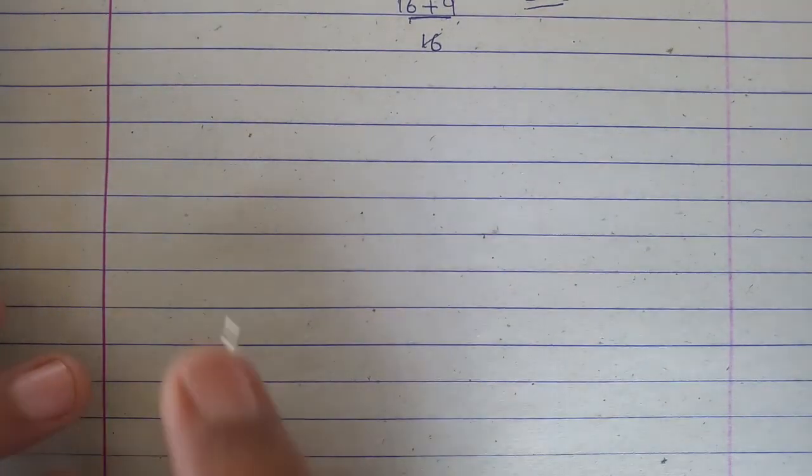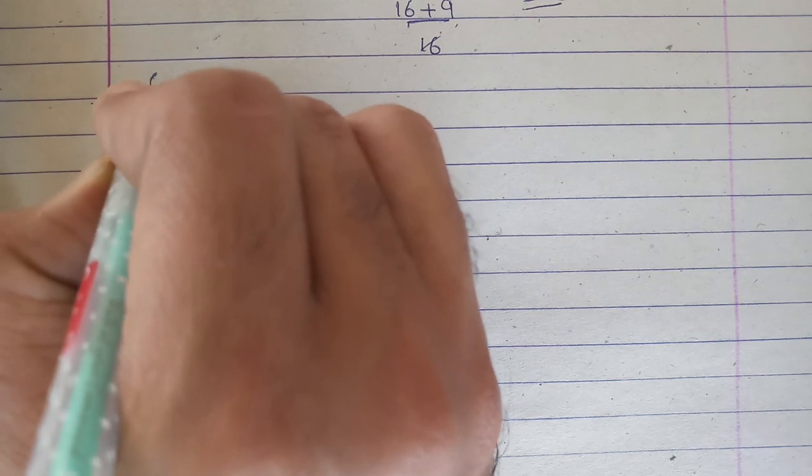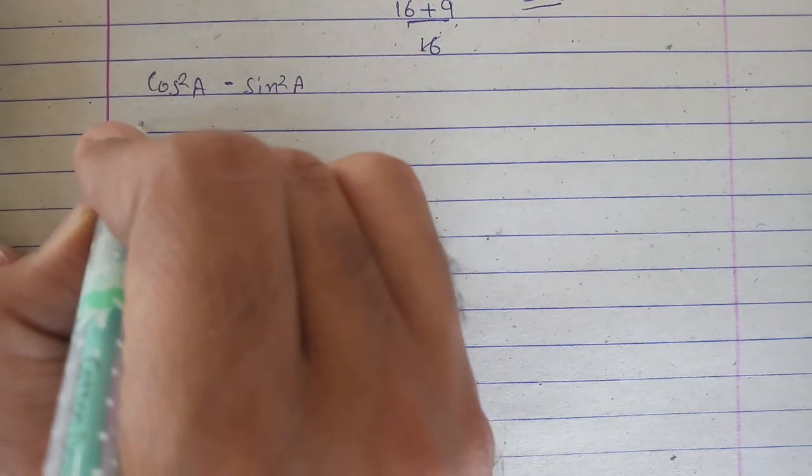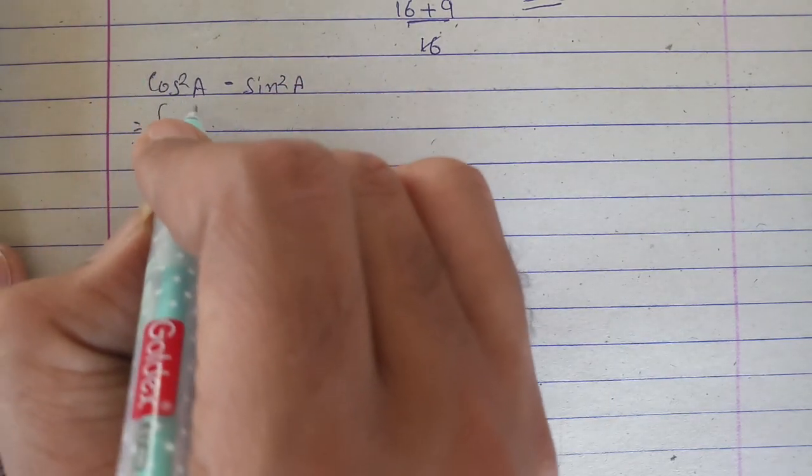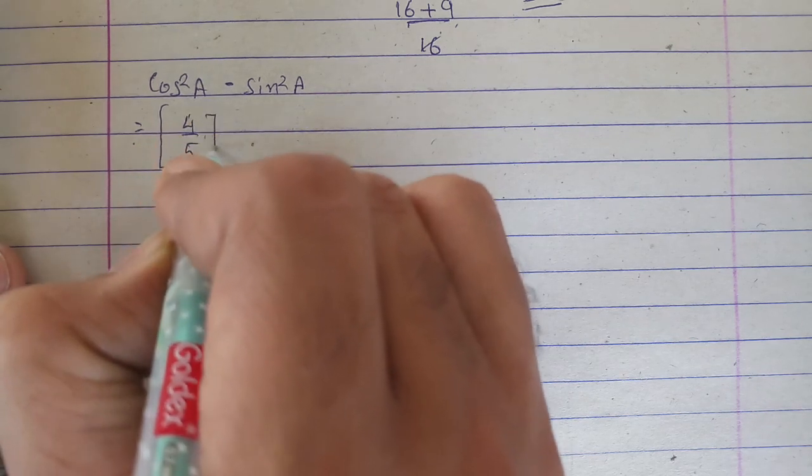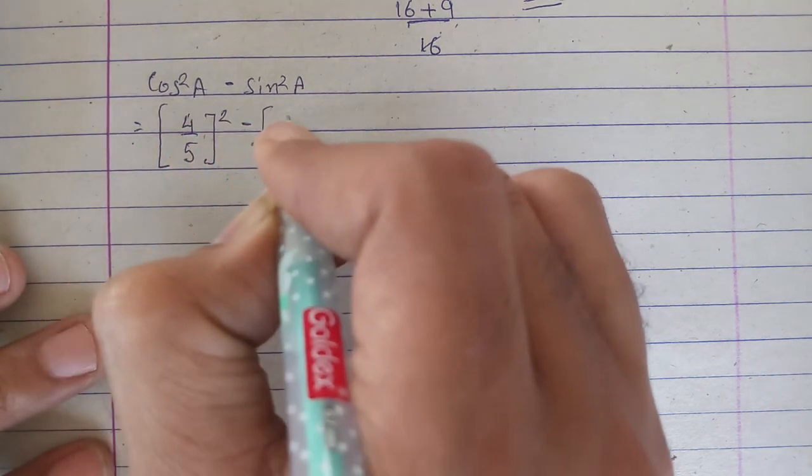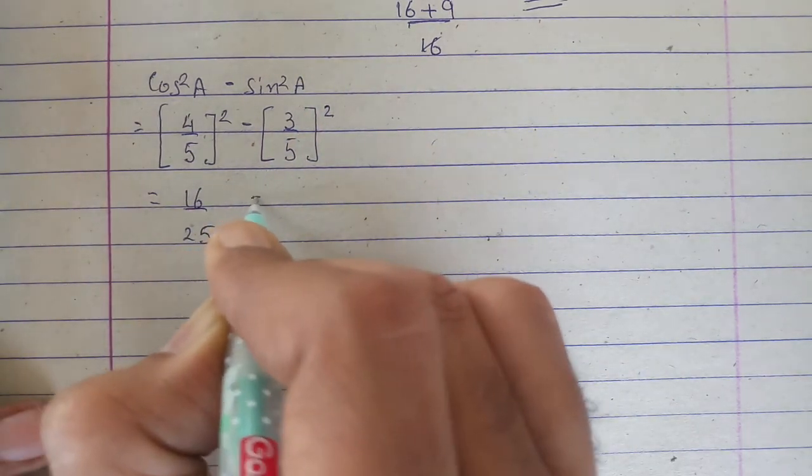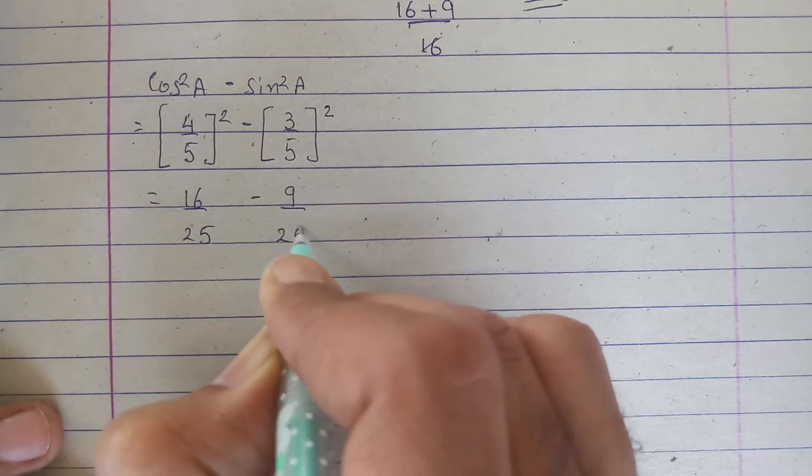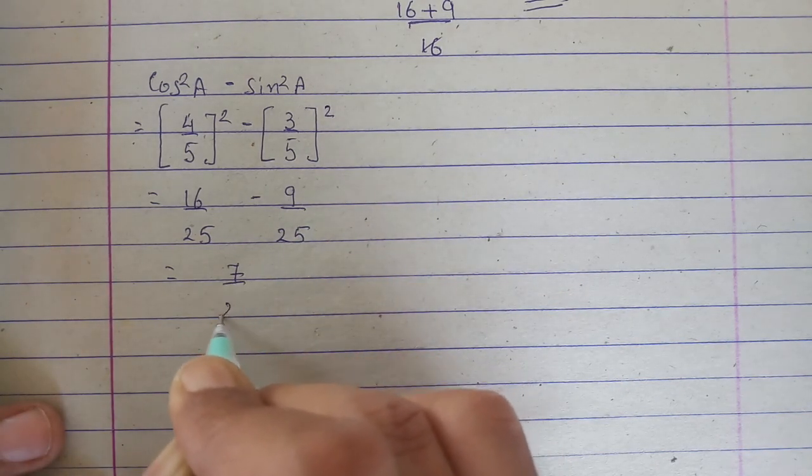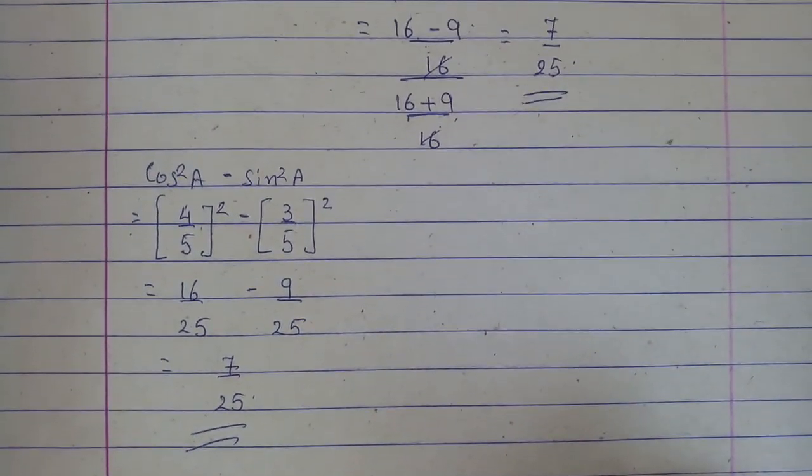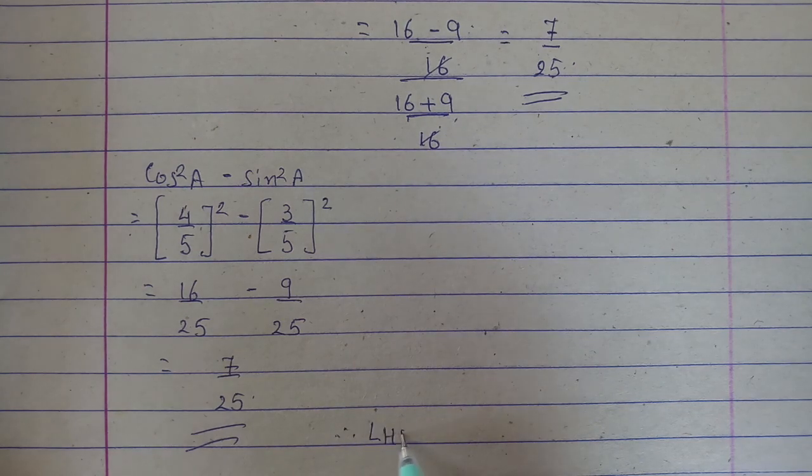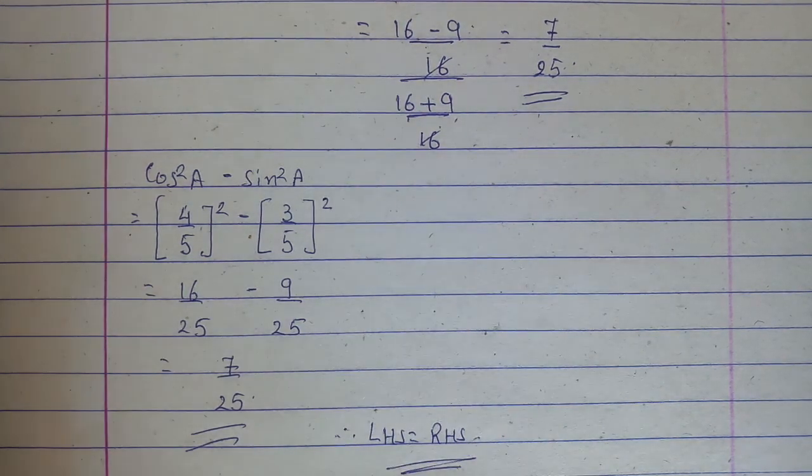Now RHS, that will be cos²A minus sin²A. Cos we found is 4/5, so (4/5)². And sin we found is 3/5, so (3/5)². That is 16 upon 25 minus 9 upon 25. And that will be 7 upon 25. So LHS answer is 7 upon 25, RHS is also 7 upon 25. Therefore LHS is equal to RHS. Clear?